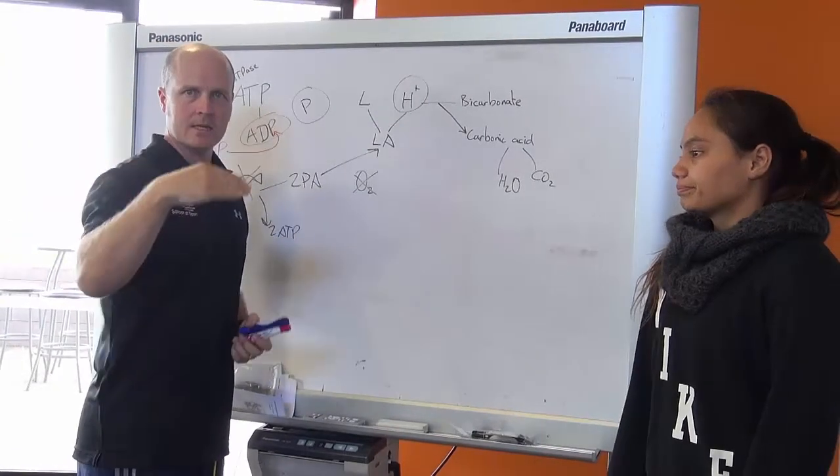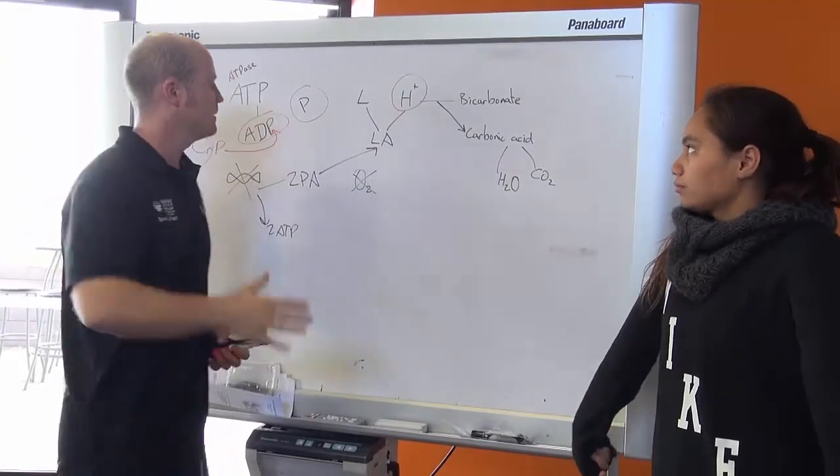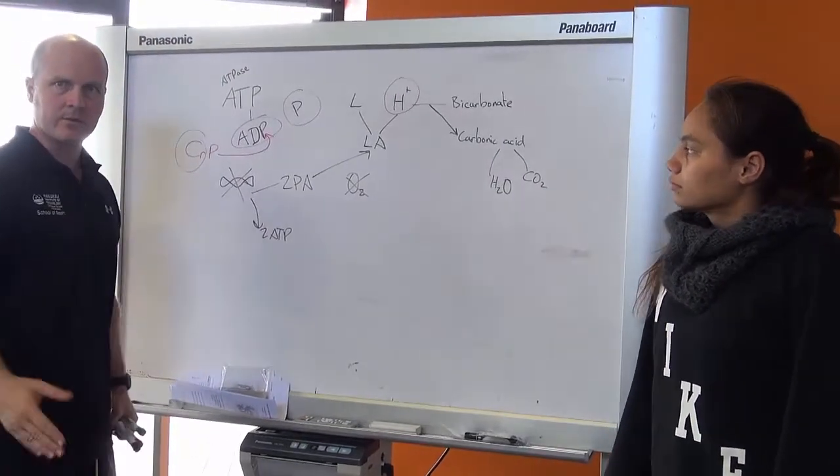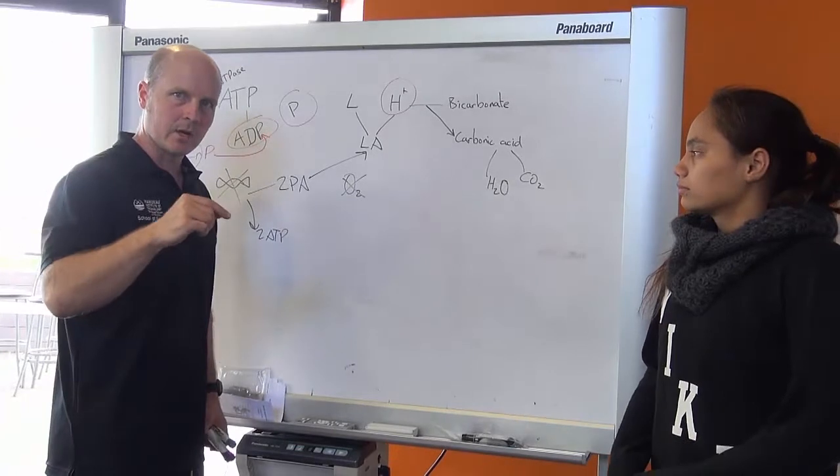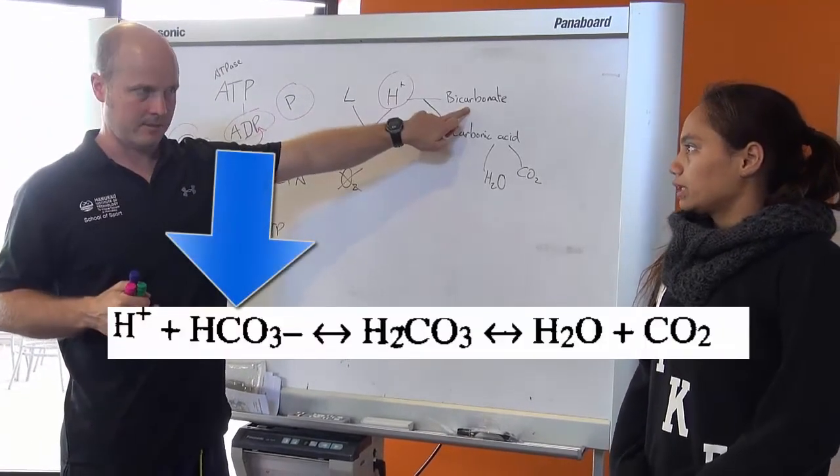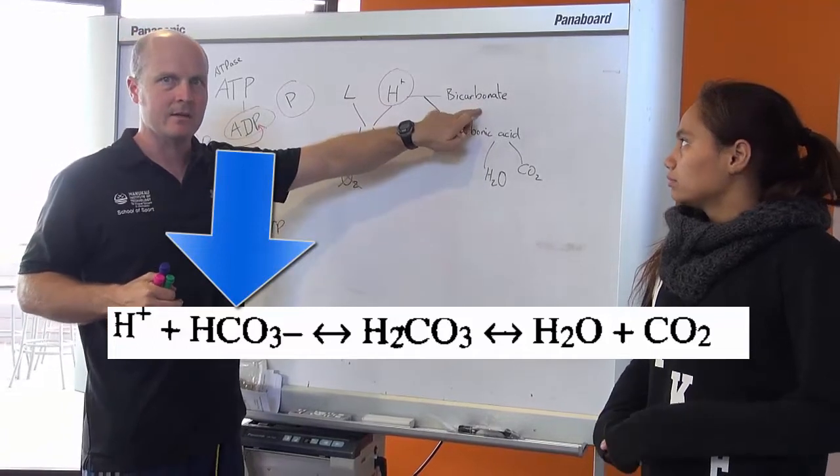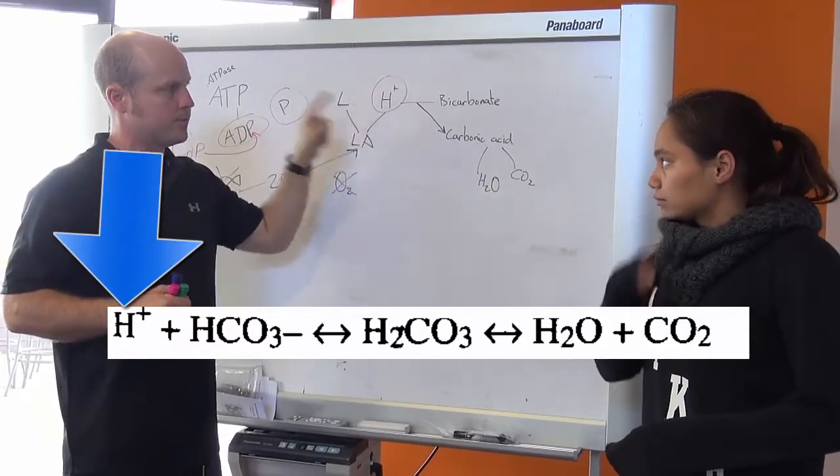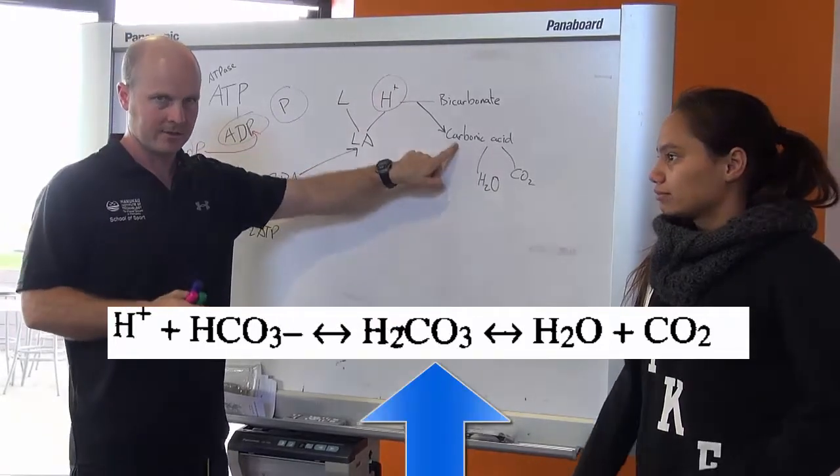So when our acidity in our body gets too high, all the ways we create ATP start to fail and we fatigue. But luckily we've got a buffering system, which is bicarbonate. And we have our bicarbonate, which is a base, and it mixes and binds with our hydrogen to form carbonic acid.